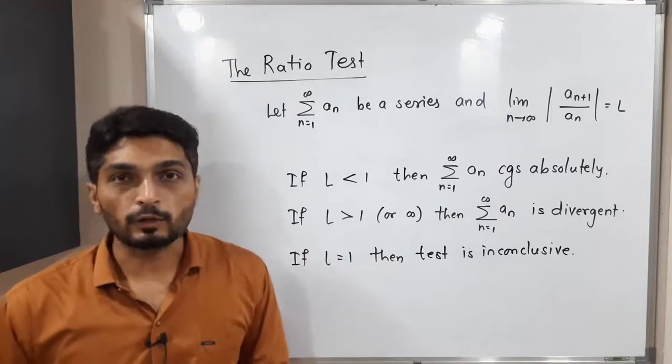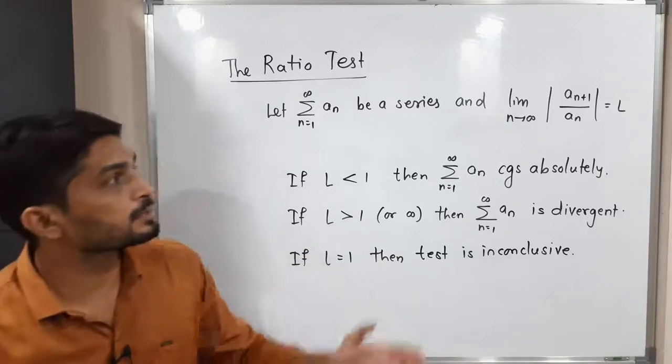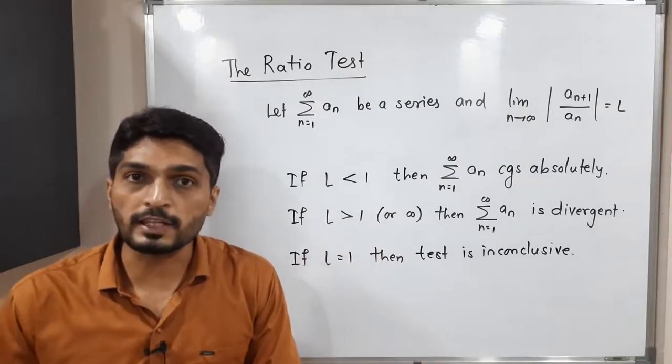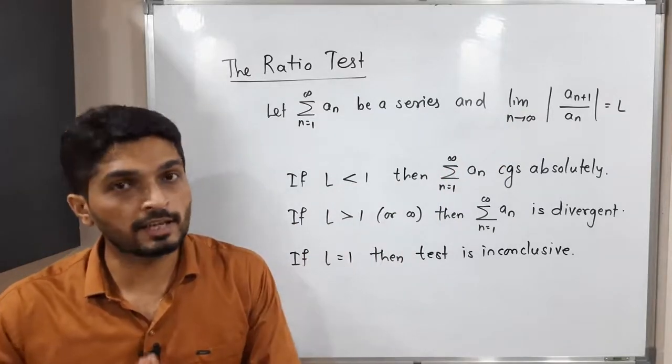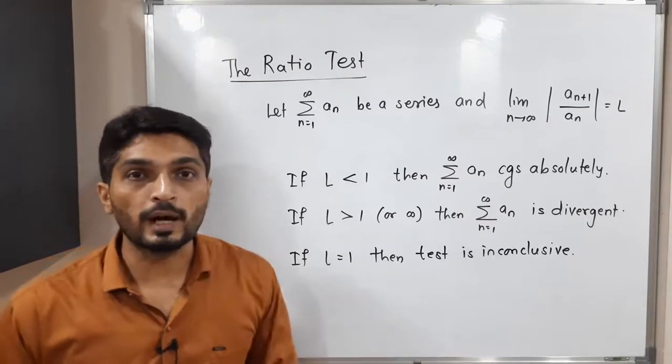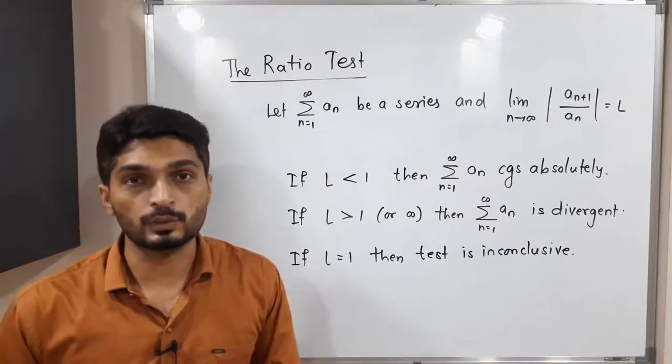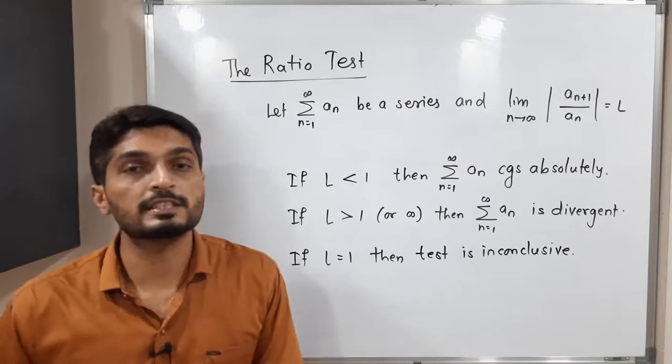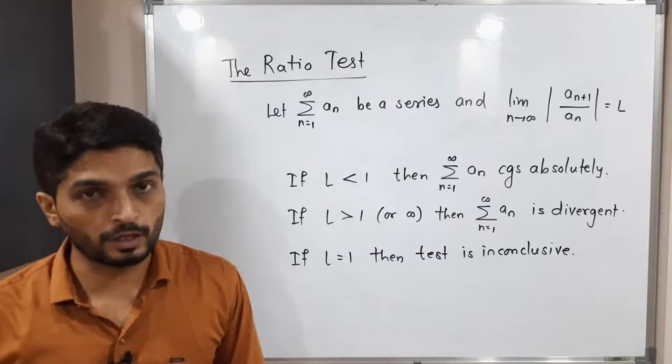If L is greater than one or if its value is infinity, that means value of this limit going to infinity, in that case definitely we can say the given series is divergent. And if value of L is equal to one, then test is inconclusive. That means using this test, we cannot conclude whether the given series is convergent or divergent.